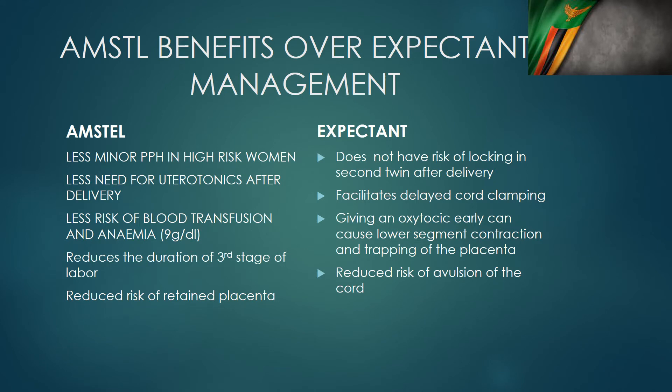What are the benefits of AMSTEL compared to expectant management? Patients who have had active management of the third stage of labor have a reduced risk of minor postpartum hemorrhage — they are likely to bleed less than 1,000 mL of blood compared to expectant management, where patients are more likely to bleed more than 1,000 mL. Once oxytocin is given upon delivery of the anterior shoulder, the need for more oxytocin after placental delivery is reduced. It also reduces the risk of blood transfusion, reduces the risk of anemia, reduces the duration of the third stage, and reduces the risk of a retained placenta.